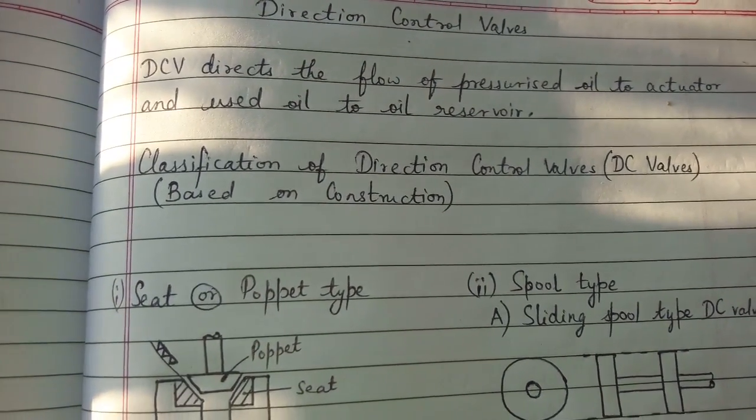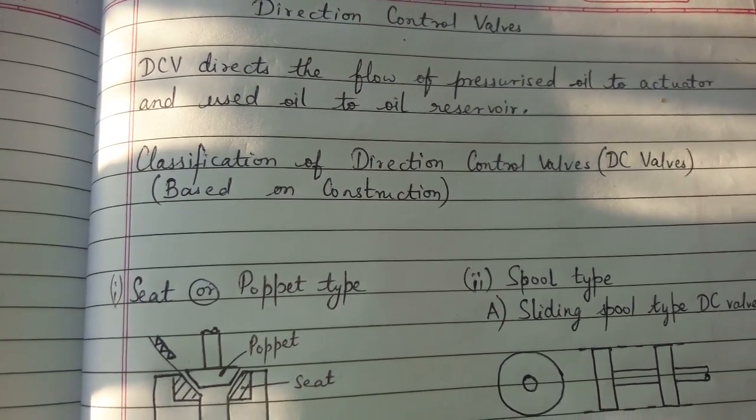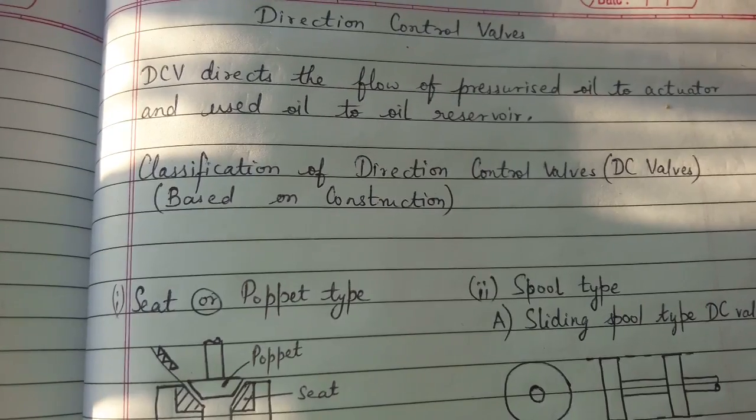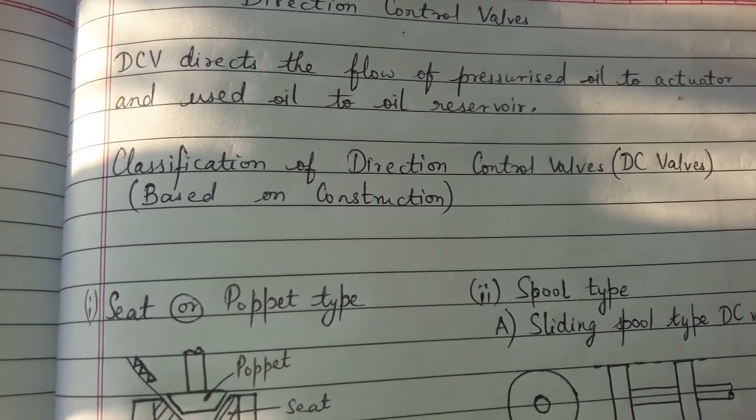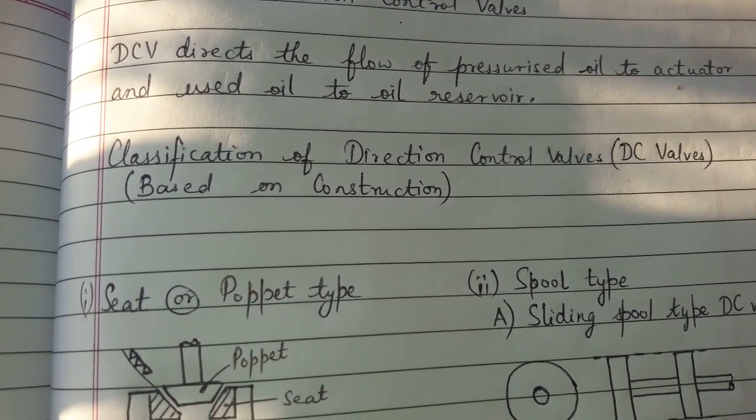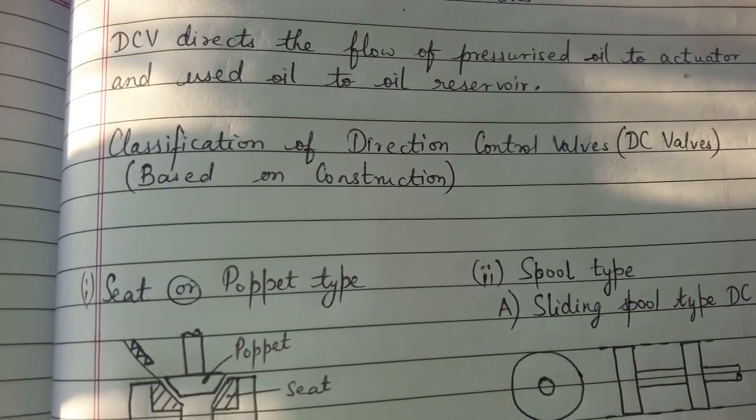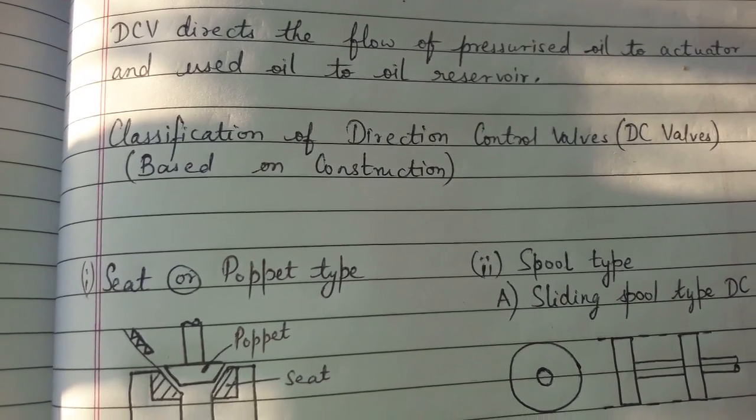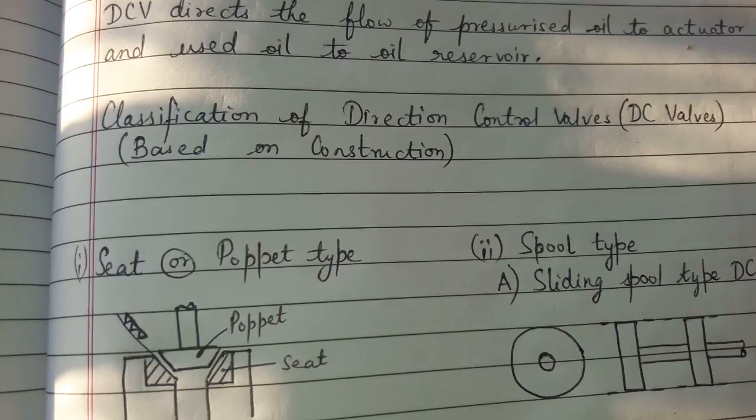This topic of discussion is direction control valve. Direction control valve directs the flow of pressurized oil to actuator and used oil to the oil reservoir. Classification of direction control valve based on construction.